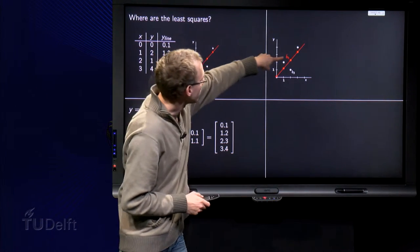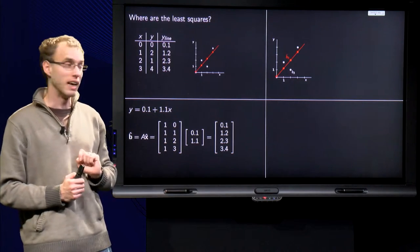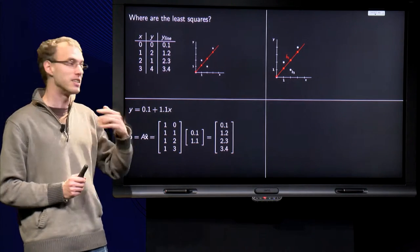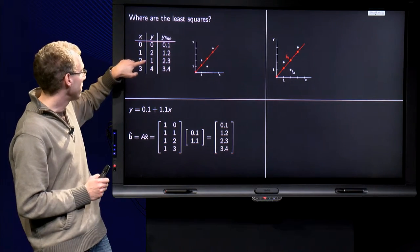The b hat, so for example the third component of b hat, is exactly here the third red dot. Whereas the third component of b, the one, is actually the third white dot.